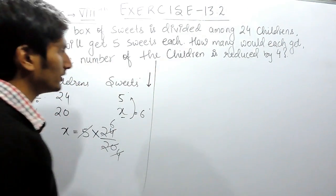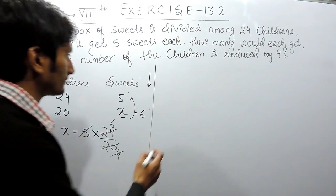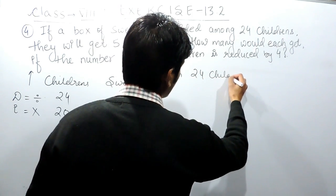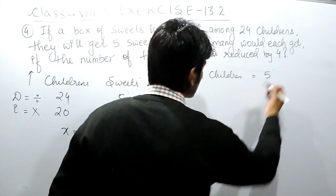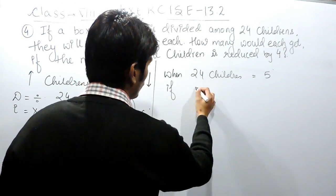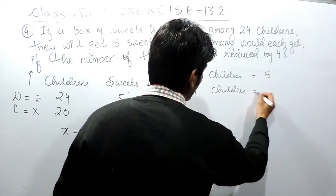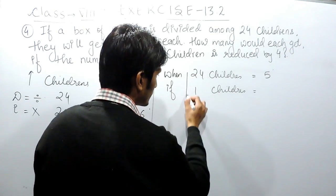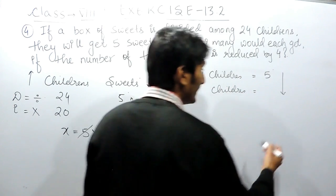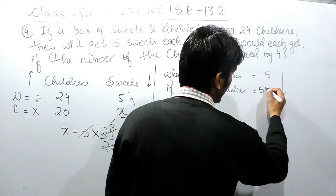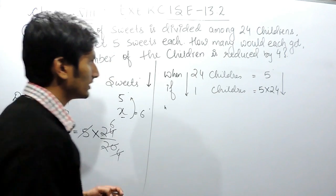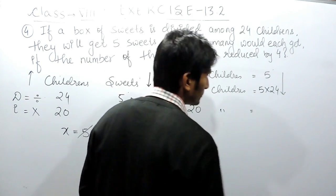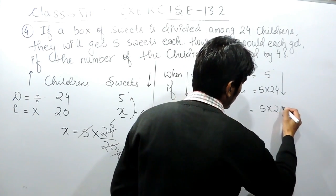There is another way of solving the same question. For Method 2 — the unitary method: when 24 children are there, each gets 5 sweets. If there is only 1 child, the number of sweets each gets will be more, because this is inverse proportion — the number of children decreased, so sweets must increase. Therefore, we multiply: 1 child gets 5 times 24 sweets.